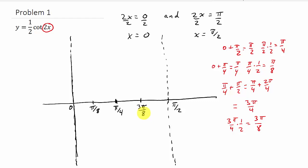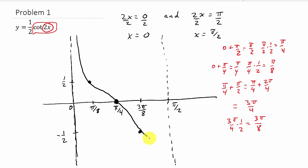Remember that cotangent gives values 1, 0, and negative 1 at those points — but each of those is being multiplied by a half. So the values become one-half, 0, and negative one-half. We plot those points at pi over 8, pi over 4, and 3 pi over 8, then sketch in the graph. Cotangent starts at one-half, goes to 0, then to negative one-half. It's a bit slippery drawing on a tablet, but that's the sketch.